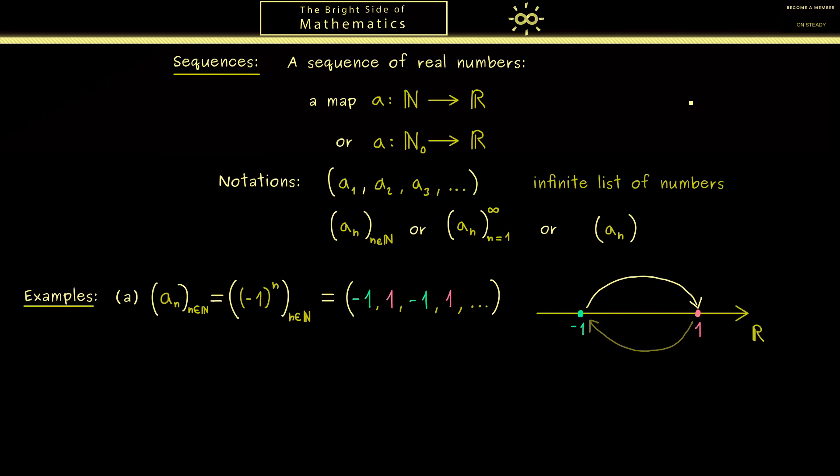However, this is not the only way to visualize a sequence because we already know it's simply a map. Therefore, you could also just draw the graph of this map. In other words, we have a set in this coordinate system. But please remember we have as the domain just the natural numbers, while the codomain is the real numbers. Therefore, on the y-axis we find R.